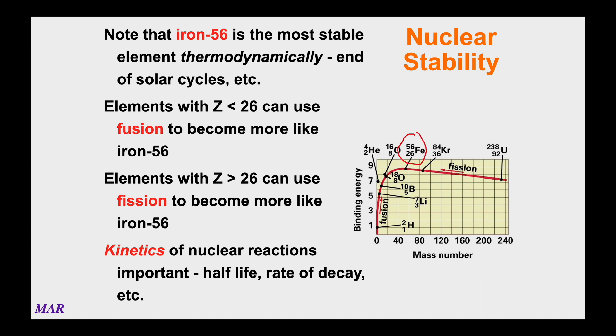People consider iron-56 to be the most stable element thermodynamically. We see this kind of stuff if you know about astronomy. A lot of times when the suns go nova or supernova, iron-56 is like the end. It can't make any more energy and that's when the sun begins to break down. Even the power of the sun is unable to make more than iron-56.